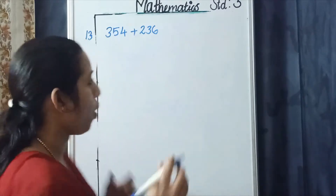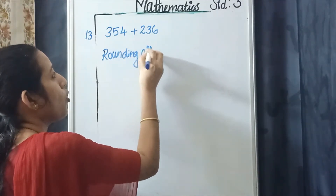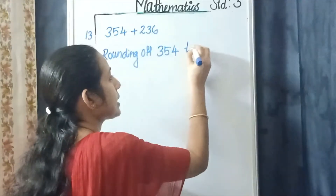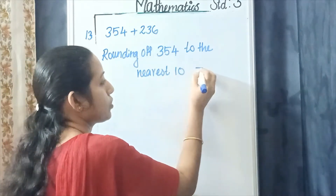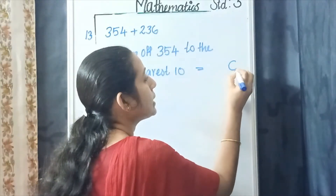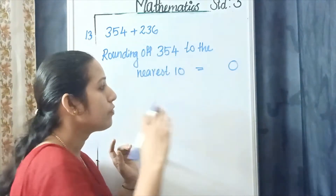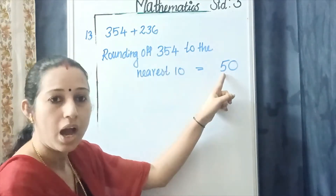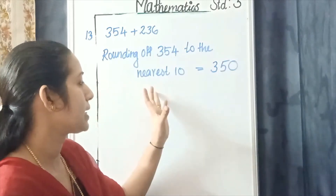First, rounding off. You have to find the estimates. So rounding off the first number, 354. Rounding off 354 to the nearest 10. What is the answer? Zero in the ones place. Next, we check the ones digit in the question, which is 4. That is less than 5, so we write the same digit in the tens place, and no change in the hundreds place. So 354 rounded off to the nearest ten means 350.